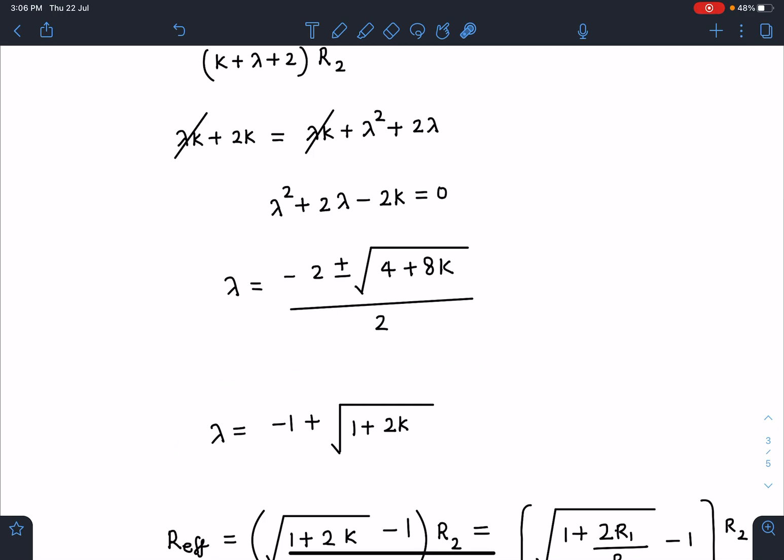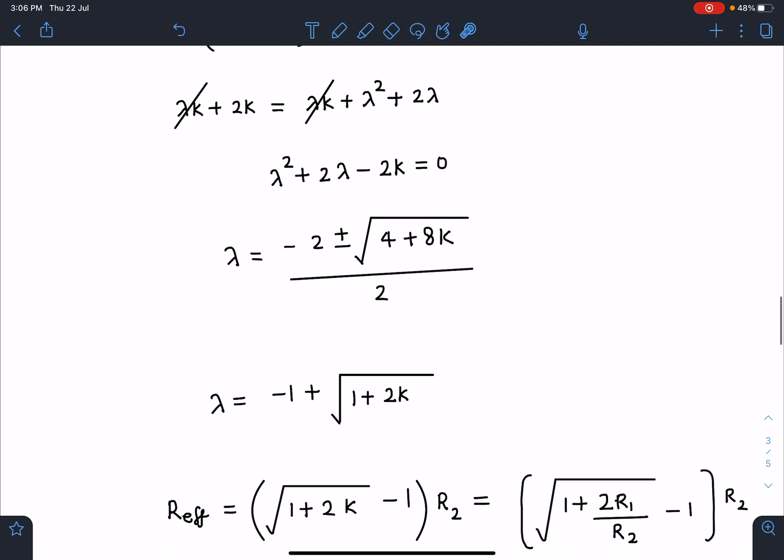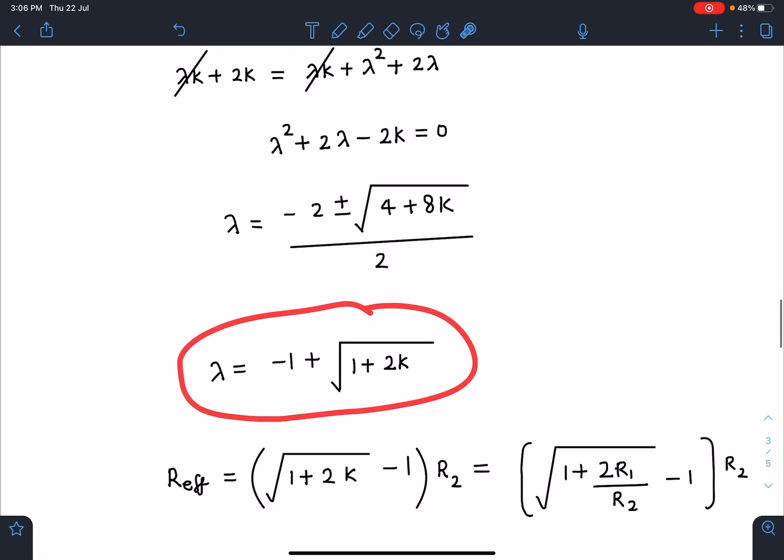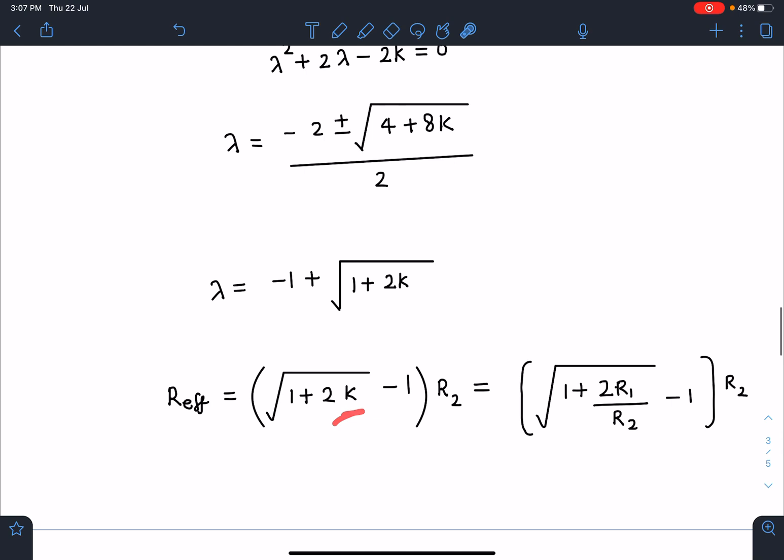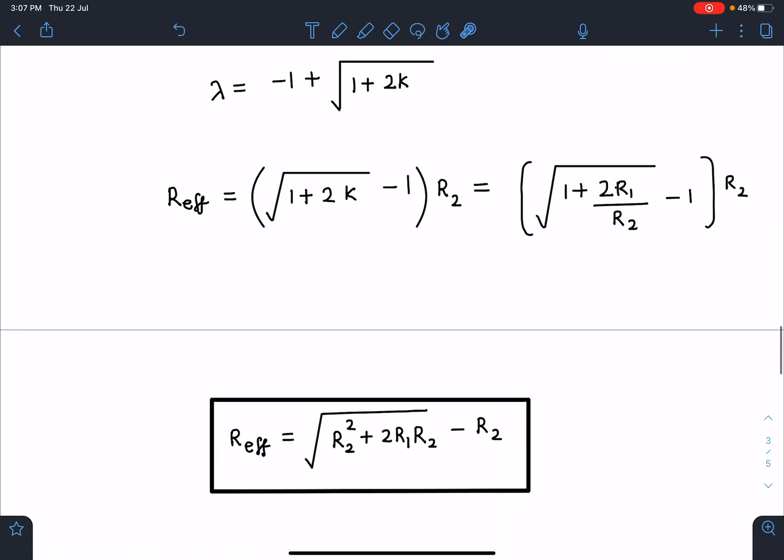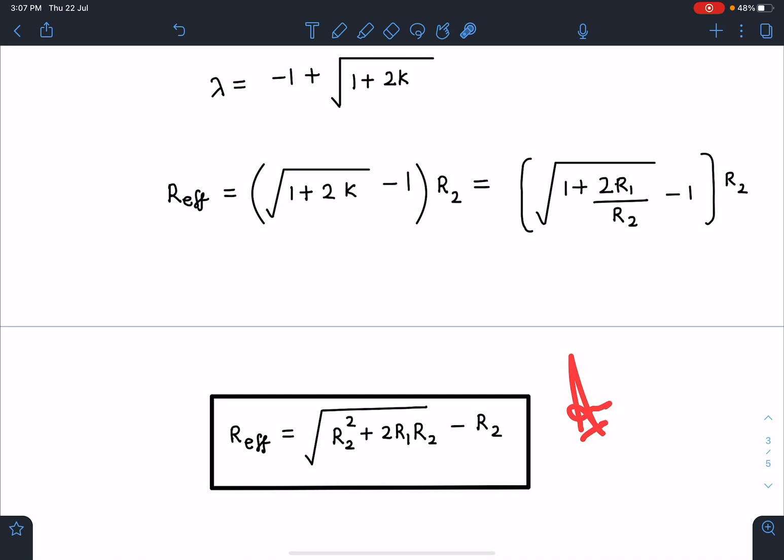Now I'm going to substitute the value of k in this. R effective is this lambda times R2, so I'm rearranging this term to get one plus 2k minus 1 times R2. If I substitute the value of k, which is R1 by R2, my effective resistance becomes one plus root of one plus 2R1 by R2 minus 1 times R2. If I take this inside here, this is going to be the final answer for R effective, which is root of R2 square plus 2R1R2 minus R2. Very few circuits we see with this kind of resistance distribution R1, R2. I hope it would have given a new approach to you for solving such types of circuits.